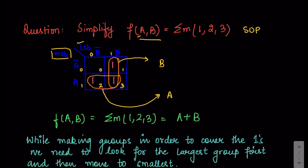So the boxes are numbered 0, 1, 2, 3. If you change the position of the MSB bits these numbers will also change, so it is advised to keep one particular convention. Now we write down the min terms 1, 2, and 3, and wherever we have boxes corresponding to these min terms we write a 1, since we are solving the SOP expression. So we have written 1 in boxes 1, 2, and 3.